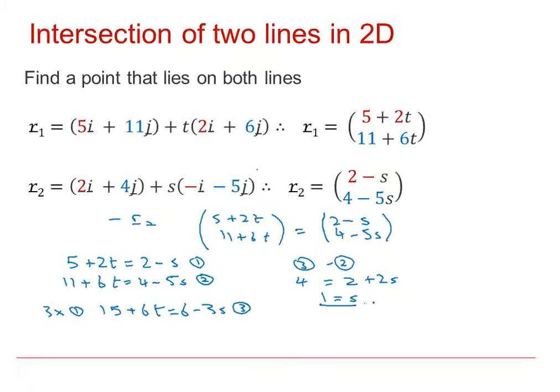And if we substitute S equals 1 into, say, equation 1, we get 5 plus 2T is 2 take away 1, therefore T is minus 2.